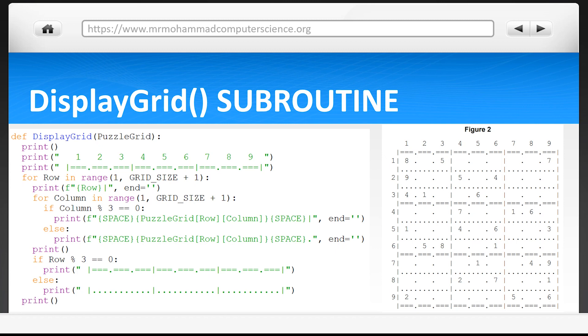We've then got an interesting nested loop which contains for loops and if statements. This loop is effectively taking the data from puzzle grid and filling up our actual grid to produce what we see in figure 2.